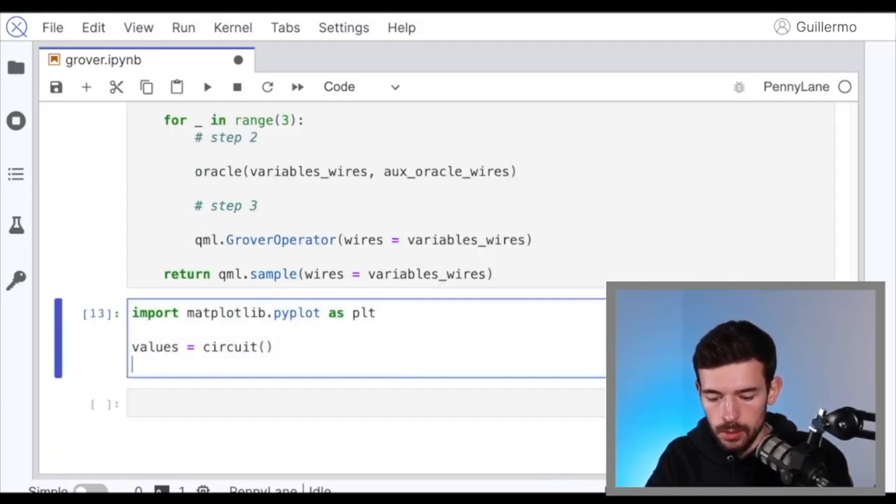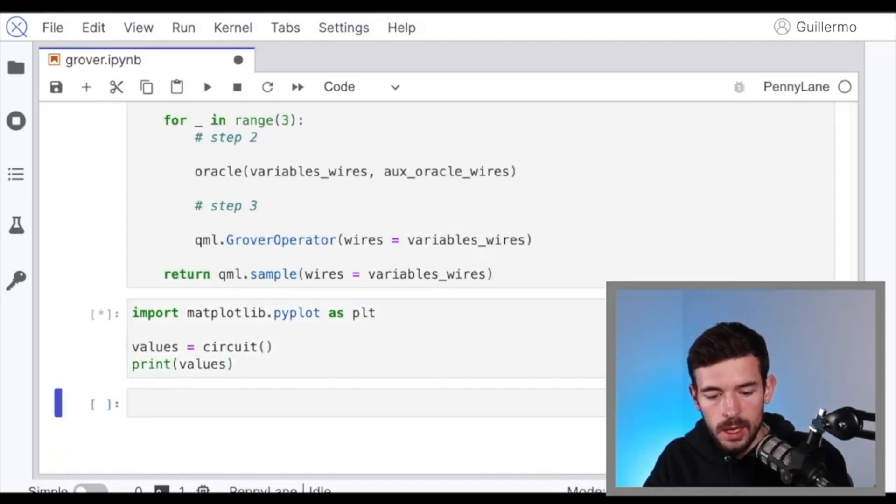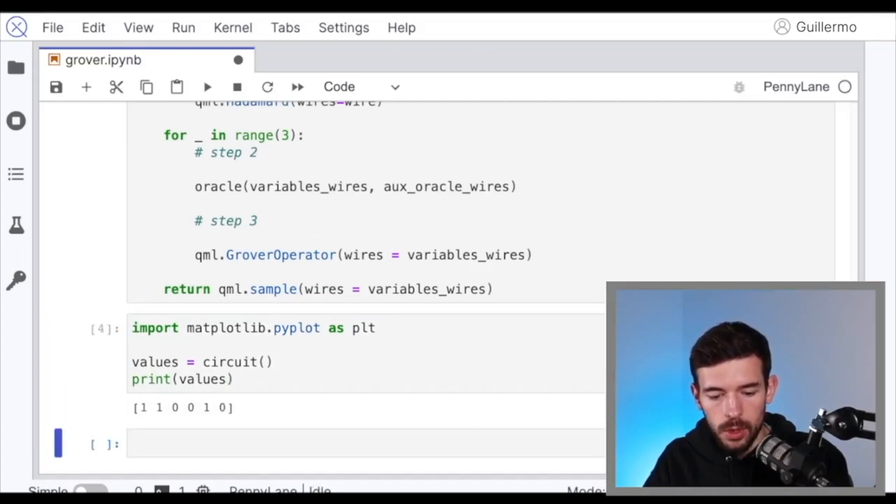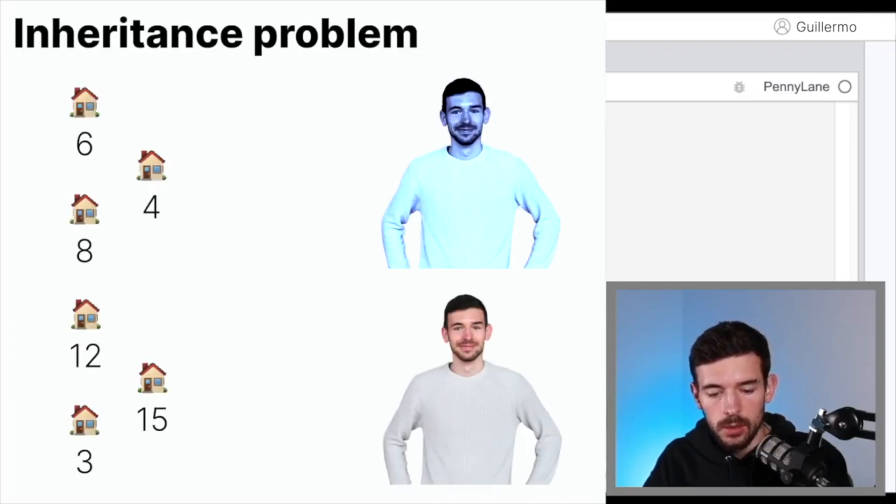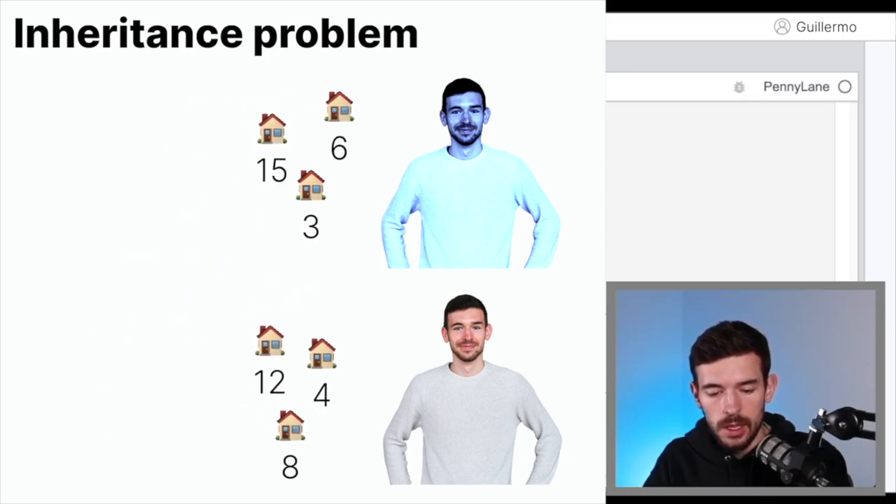So now, if I call the circuit, I get this solution: one, one, zero, zero, one, zero. It means the second sibling is going to get the first, the second, and the fifth property.